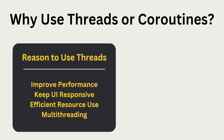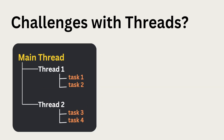Before we dive into the challenges of threads, let's talk about why we use threads or coroutines. The main reason is to improve performance by handling multiple tasks at once. This is important for keeping the user interface responsive during long tasks like downloading files or processing data. Threads and coroutines also allow for better use of resources like CPU cores by running multiple threads in parallel.